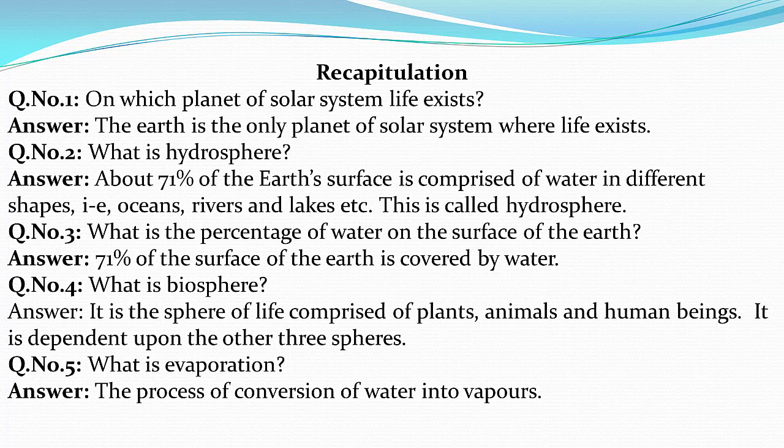Recapitulation: Now we will discuss the key points of today's lesson. Question 1: On which planet of the solar system does life exist? — Earth is the only planet of the solar system where life exists. Question 2: What is hydrosphere? — About 71 percent of the Earth's surface is comprised of water in different shapes such as oceans, rivers, and lakes. This is called hydrosphere.